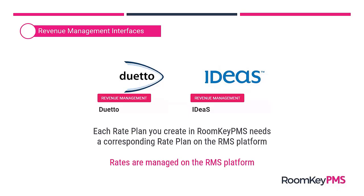So instead of controlling your rates in Roomkey, you're actually managing your rates on the RMS platform, and those rate changes or price changes are being pushed down into Roomkey. So because you're using the RMS platform to change your rates, you would actually refer to their support information on how to make changes to a rate price or a single room type price. Those changes are not controlled in Roomkey when you're working with an RMS tool like Duetto or Ideas.